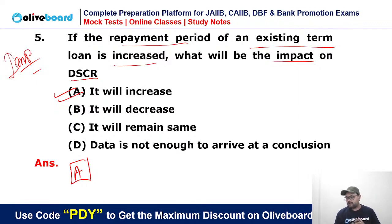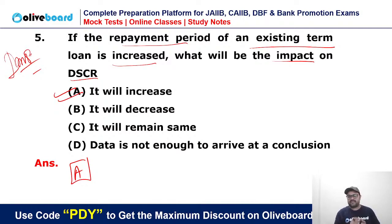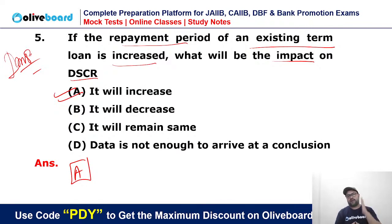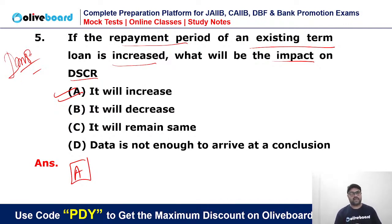So today we covered three important topics and reached up to Topic Number 25. These are the five questions for today. I hope you liked the session. Please forward this to your friend circle — it was a very important session covering three important finance topics. We will meet again tomorrow with three new topics from the Macmillan book. Thank you very much, have a great night, bye bye.